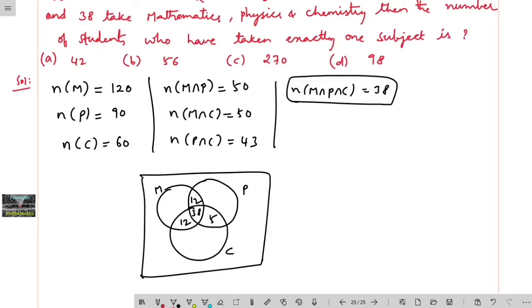And n of M is given 120, subtract this 50 is 62, 120 minus 62 will be 58. And n of P is given 90 so here it will be 55, and n of C is given 60 so here 50 plus 5 is 55, remaining is 5.